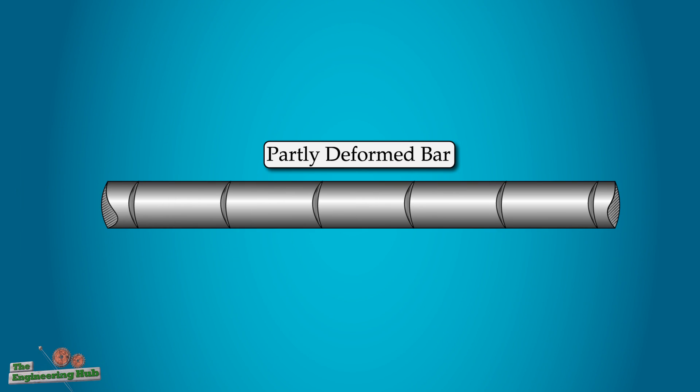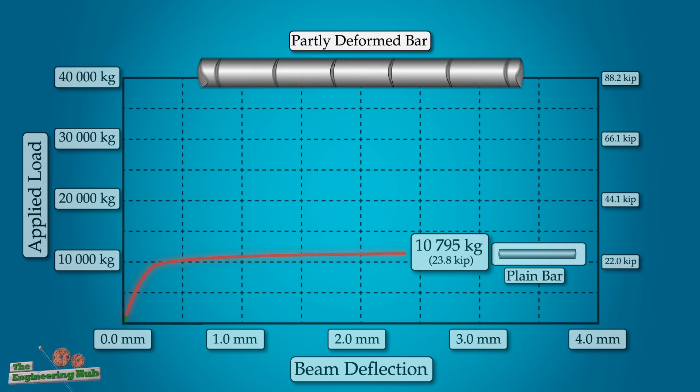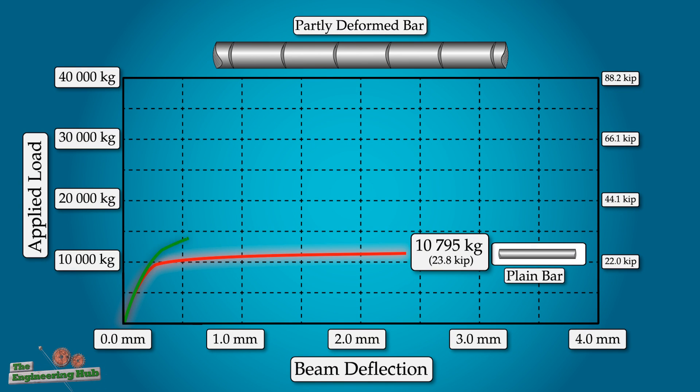The rebar of the second beam had deformations, but they were 3.5 centimeters apart, essentially putting it somewhere between a plane and a fully deformed bar. Even these infrequent bumps already had a drastic effect on the load carrying capacity of the beam, reaching a maximum load of 20.7 tons before failure.